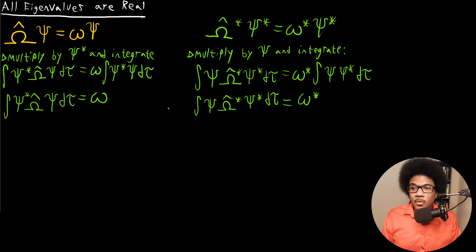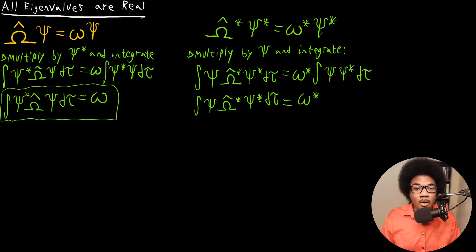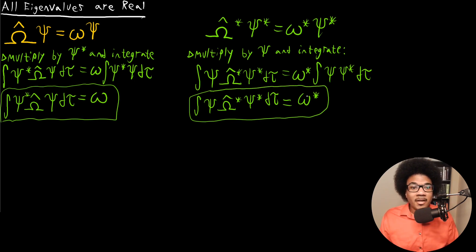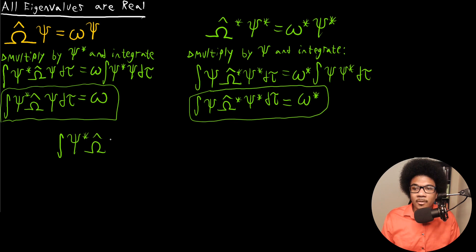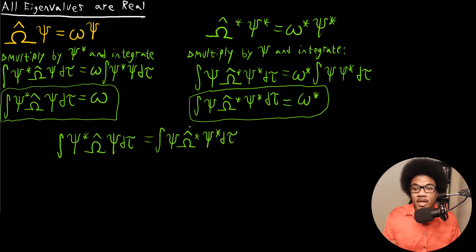So we have two expressions: the first integral is equal to the eigenvalue omega, and the second integral is equal to the complex conjugate of that eigenvalue, omega star. Since the operator corresponds to a Hermitian operator — and all quantum mechanical observables correspond to a Hermitian operator — these two integrals are actually going to be equal. That is exactly the Hermitian property: these two integrals should be equal.